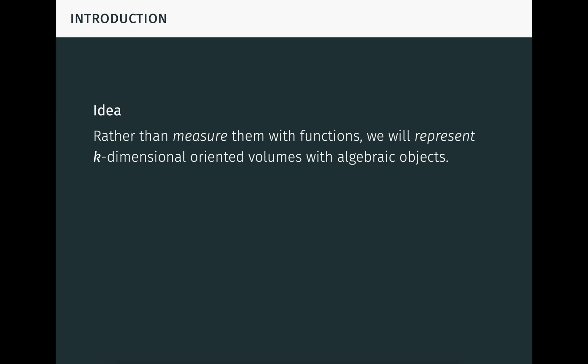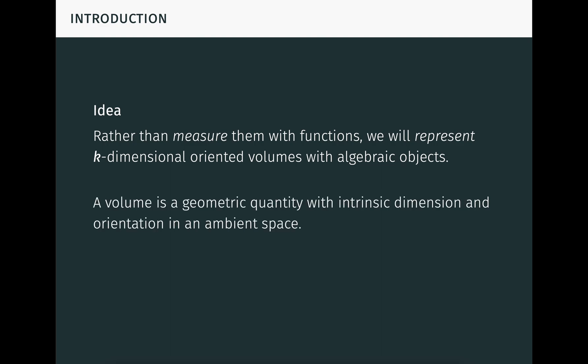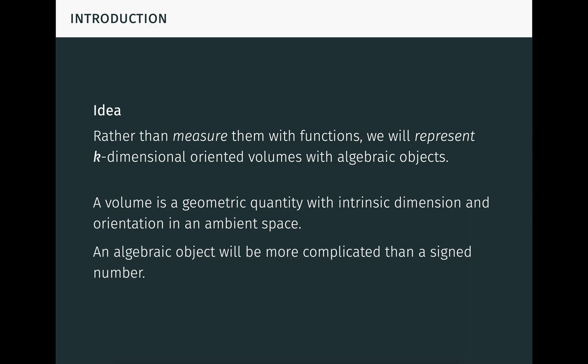Here's the motivating idea. Rather than measuring them with functions, we'll represent k-dimensional oriented volumes directly using algebraic objects. A volume here is being thought of as a geometric quantity, with intrinsic dimensionality and orientation in some ambient space. So an algebraic object representing it will need to be more complicated than just a signed number. For example, a two-dimensional oriented area of 5 units and a three-dimensional oriented volume of 5 units will be represented by different objects, even though they both correspond to the number 5.